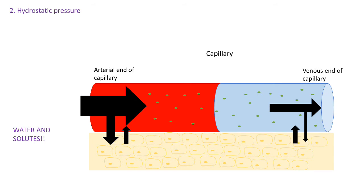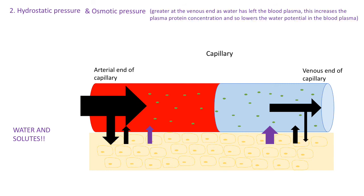The other factor is osmotic pressure, determined by those plasma proteins. The osmotic pressure is greater at the venous end of the capillary compared with the arterial end, because water has been lost across the capillary from the arterial to the venous end. As a consequence, the plasma proteins are more concentrated at the venous end, lowering the water potential there, so there's a greater osmotic pressure.